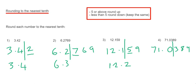So our two choices would be to round it down to 71.0 or round it up to 71.1. If we look at the number after the line, which is a 3, since that number is less than 5, we round the number down to 71.0.